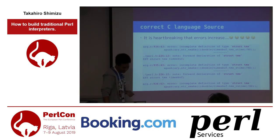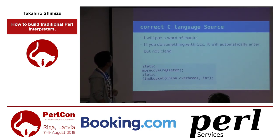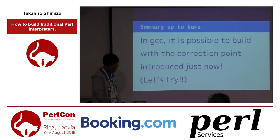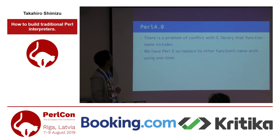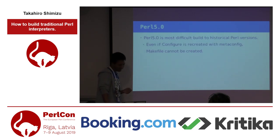It is heartbreaking that errors keep increasing. More errors: a function not defined as static. I add one magic fix — with GCC it automatically works, but not with clang. This magic source code allows building in GCC within the correct context. There is also a problem of name collision with a C library function. We have Perl 5 and Perl 1, so we replace the conflicting function name with another using a one-liner. Perl 5.0 is the most difficult to build of all historical Perl versions.